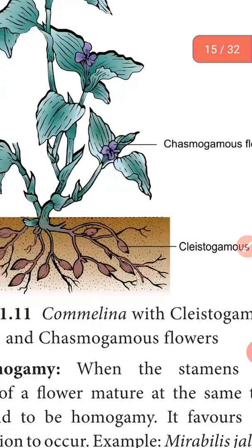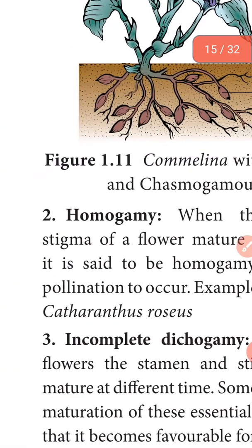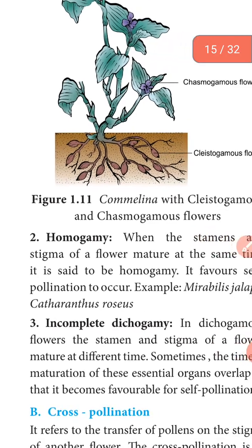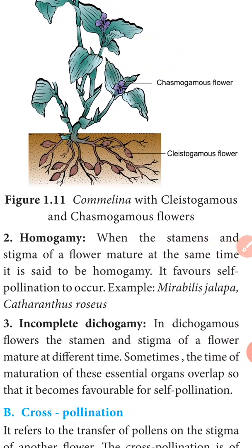The second adaptation mechanism is homogamy, where the stamen and stigma mature at the same time. For example, Mirabilis jalapa — the 4 o'clock plant — and Catharanthus roseus. The male and female parts mature at one time, making pollination easier. Second is incomplete dichogamy, where the stamen and stigma of a flower mature at different times, but the maturation times of essential organs overlap, so it is favorable for self-pollination.